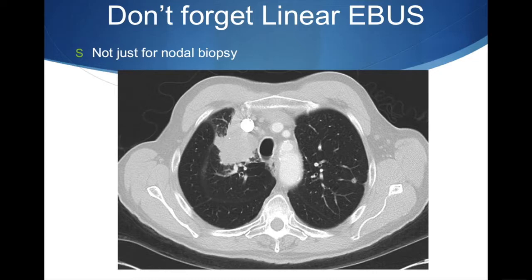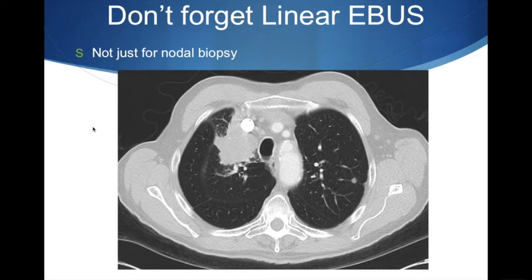Don't forget linear EBUS because it's not just for nodal biopsies. Here is a situation where we have a lung mass that is in direct contact with the trachea. So we can sit our linear EBUS scope here and put the ultrasound against the trachea, see that mass, and needle it through the trachea. That's a really easy way to biopsy rather than a CT-guided biopsy that has to come across lung, pleura, and fissure, or trying to navigate to that lesion with radial EBUS. So this is a great case for linear EBUS.